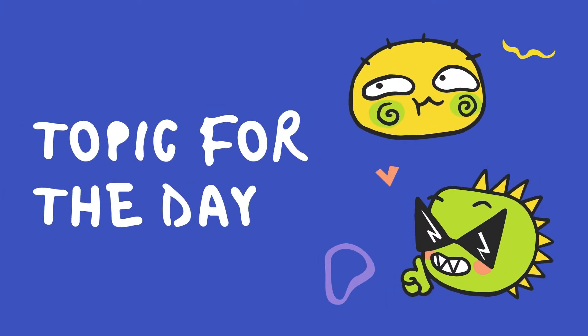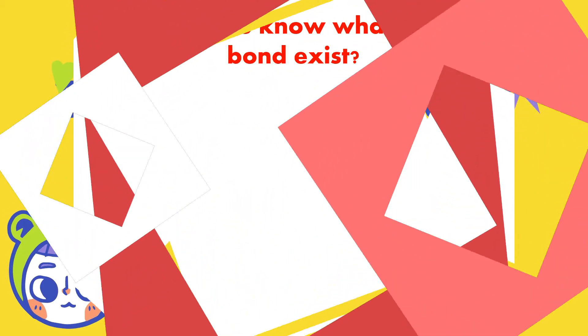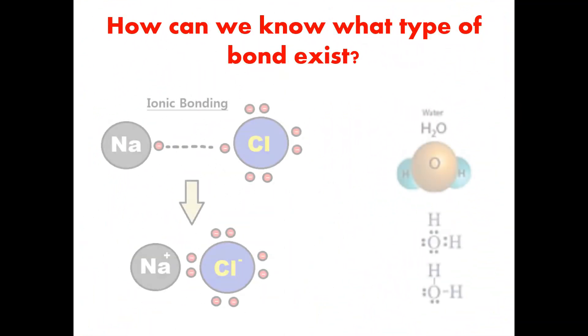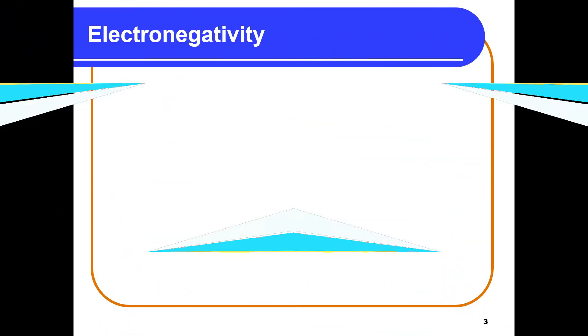Our topic for today is electronegativity. How can we know what type of bond exists without drawing the bonds or even writing the valence electrons? We can use electronegativity.